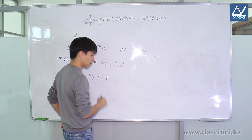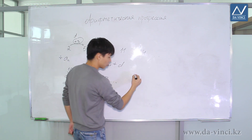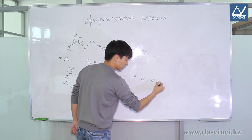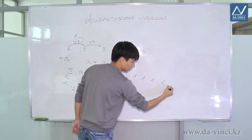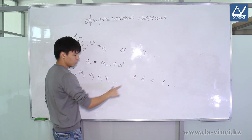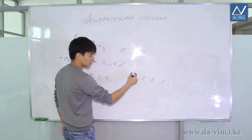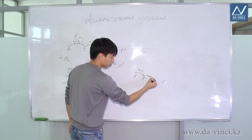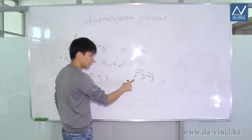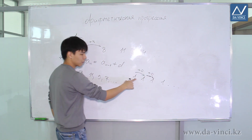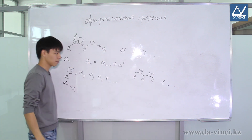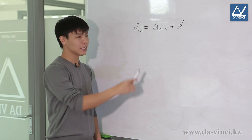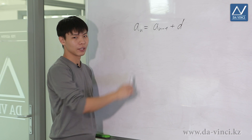Also, a sequence like 1, 1, 1, 1, 1, and so on can be an arithmetic progression — we add 0 each time. Such a sequence in which all terms are equal is called stationary. As you can see, an arithmetic progression is a sequence that is given recurrently.